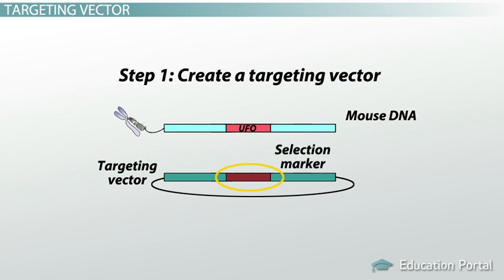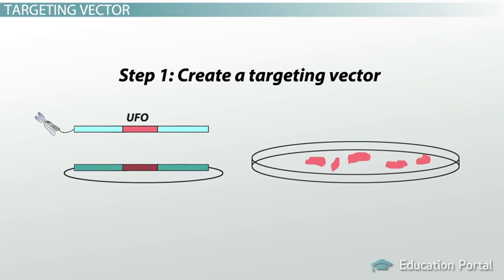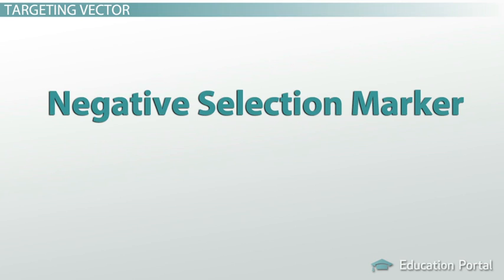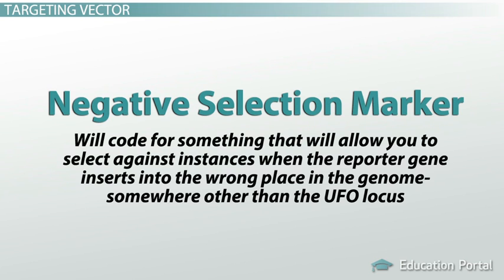For example, let's say our selection marker or reporter gene coded for bacterial resistance to an antibiotic. Normally, mouse cells do not have this gene and will die in the presence of the antibiotic. However, if you correctly replace UFO in the mouse genome with this antibiotic resistance gene, then the mouse cells would now be resistant to the antibiotic. You could then use that antibiotic to select for cells expressing the reporter gene and select against cells that still had UFO. In addition, there's another piece of DNA called a negative selection marker, which will allow you to select against instances when the reporter gene inserts into the wrong place in the genome, somewhere other than the UFO locus.